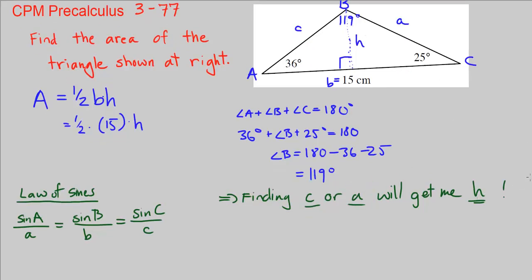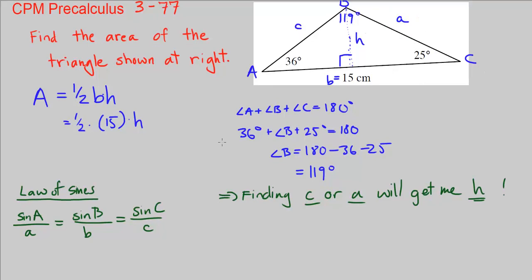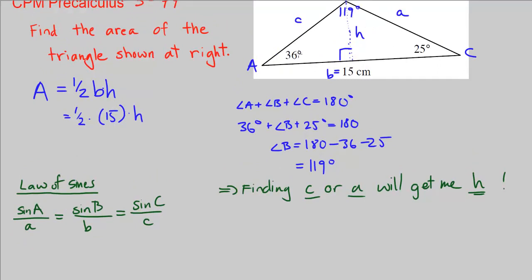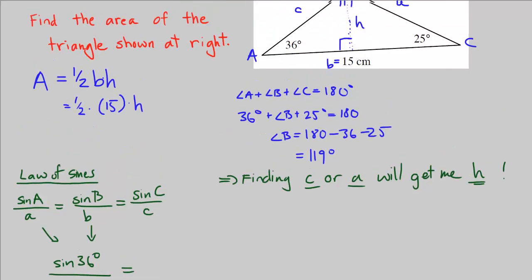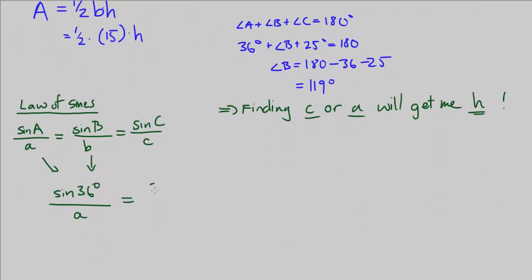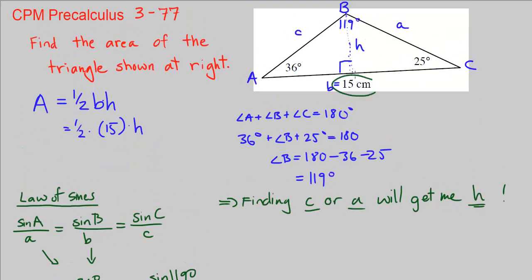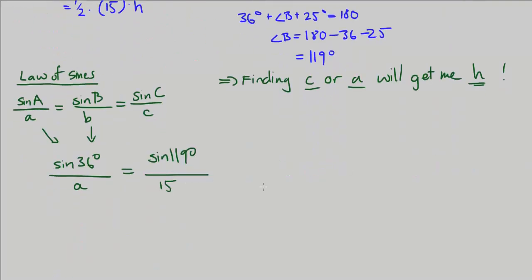Let's find side a by looking at sine of angle a over a. Angle a is 36 degrees. So I know sine of angle a is 36 degrees over a equals sine b. b we just found was 119 degrees, sine of 119 degrees over side b, which is given to us as 15 centimeters.